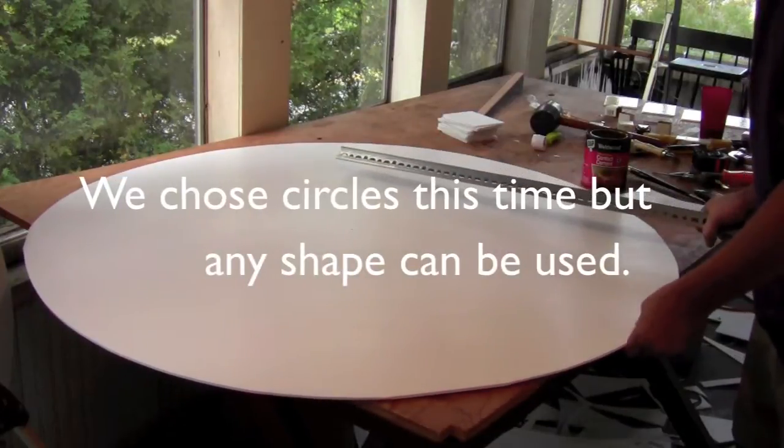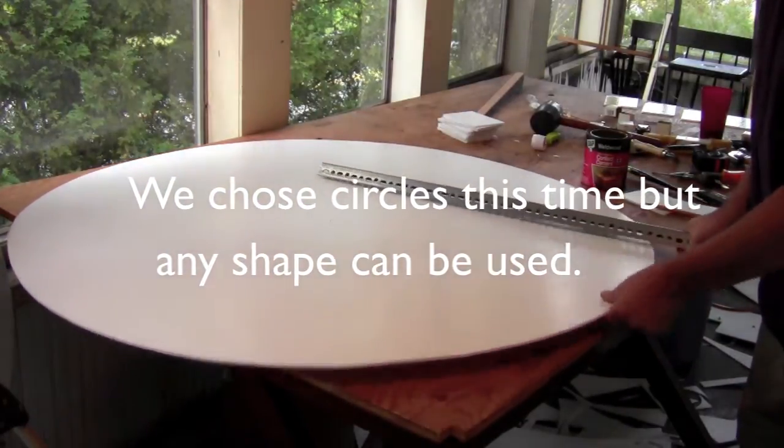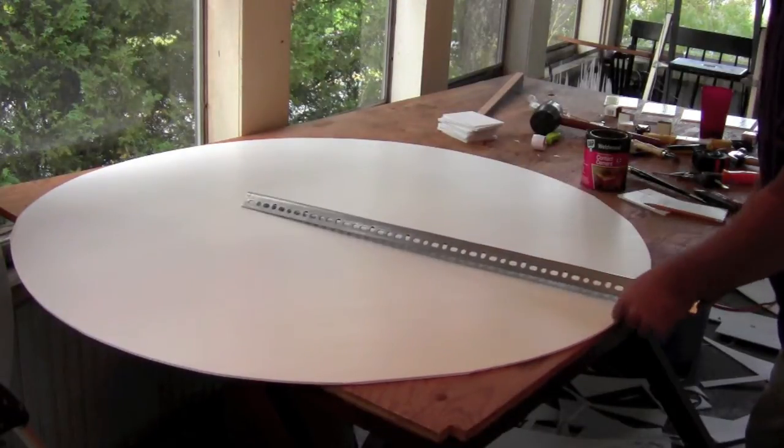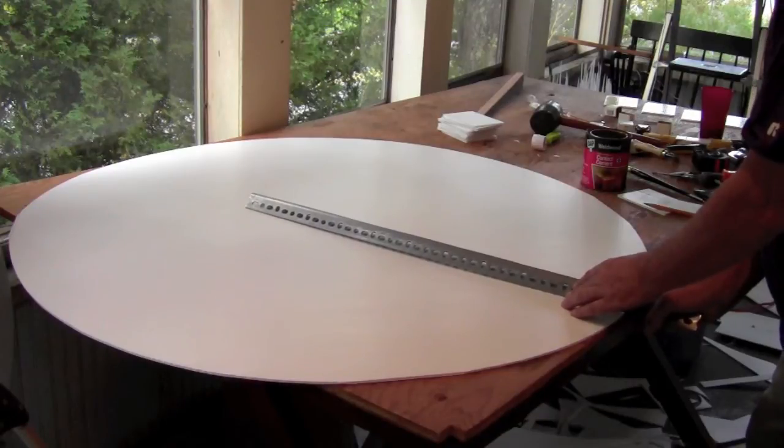Once we cut our discs, the next step is to make our vertex. And to do this, we make a cut to the center, which is already marked.